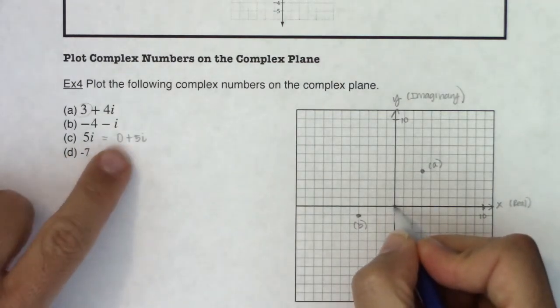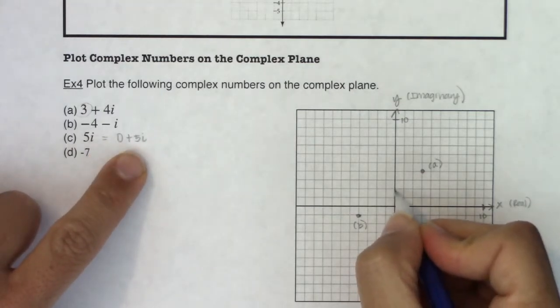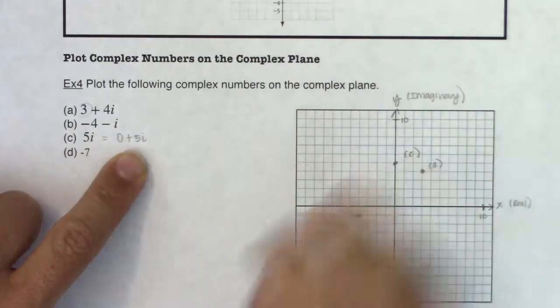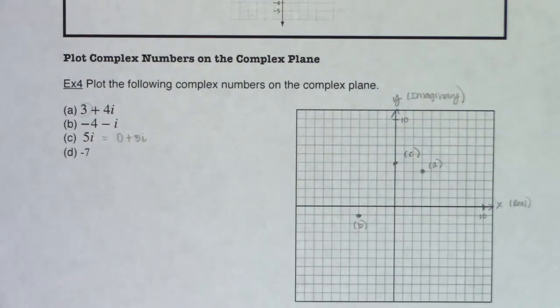So I start at the origin and I move 0 units left or right, but I move 5 units up. So 1, 2, 3, 4, 5. And this is point c on the complex plane.